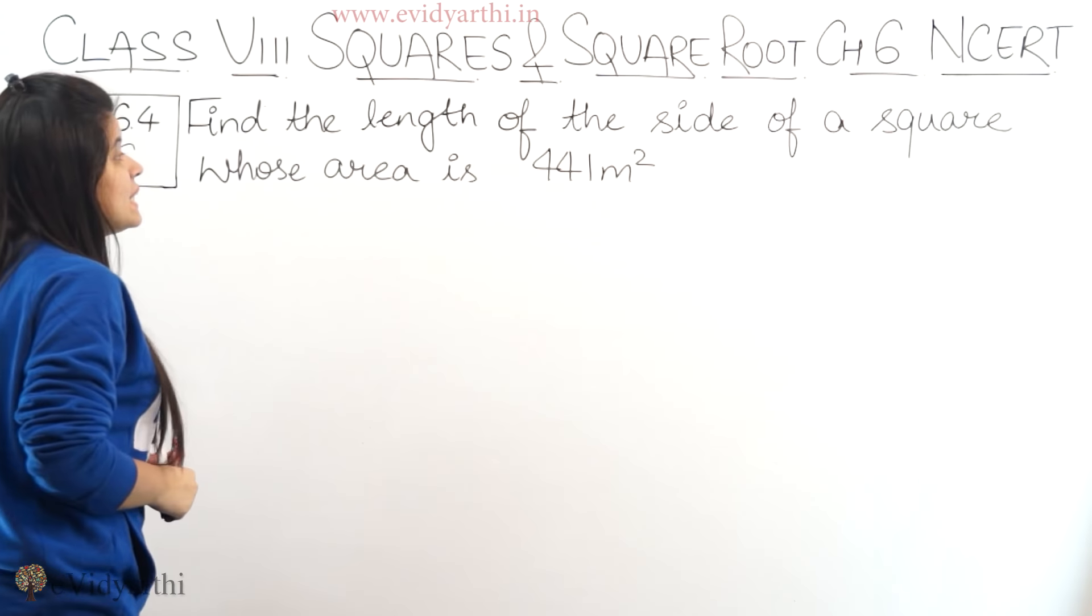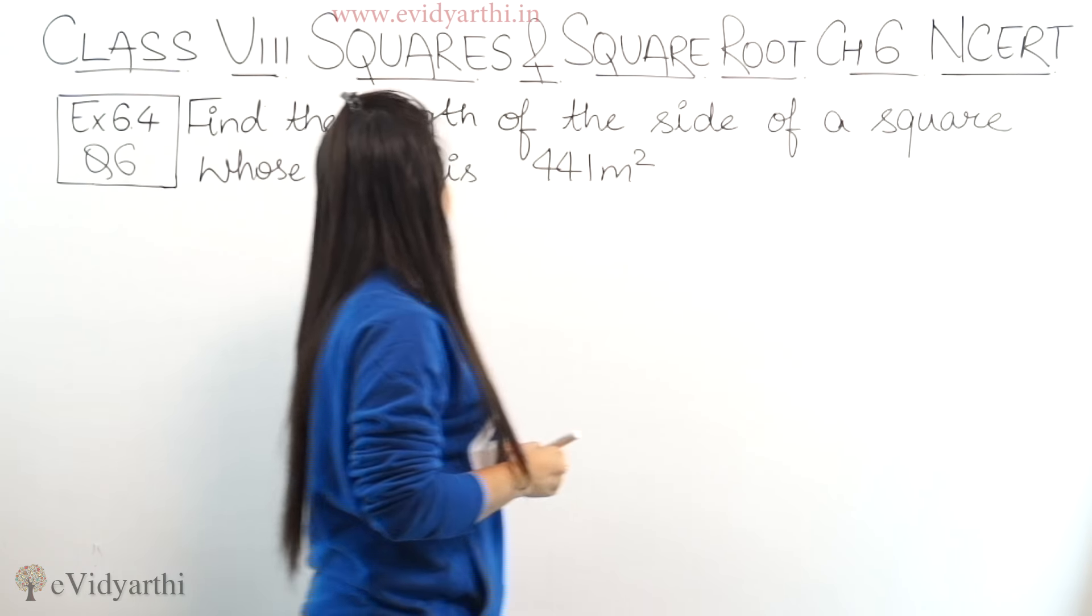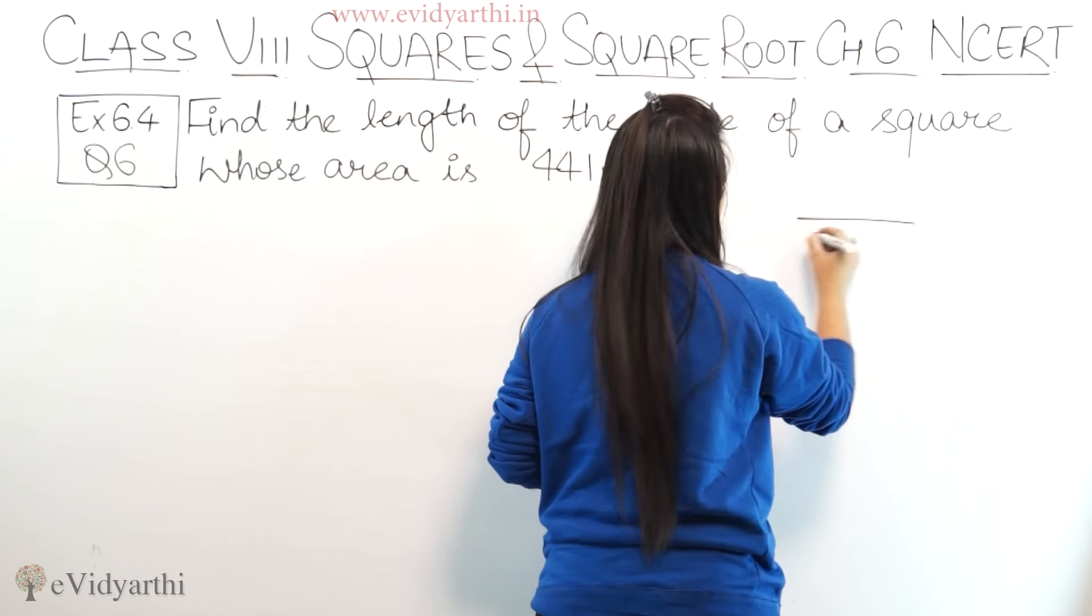So in this question we have, find the length of the side of a square whose area is 441 meter square.